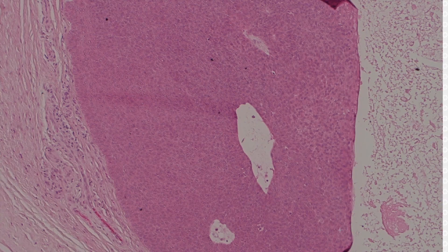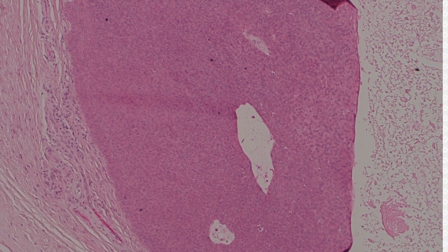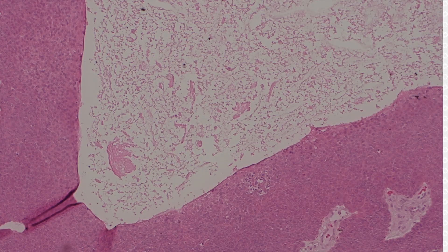Rather than the blue basaloid cells that you'd see in spirodenoma and cylindromas, these are usually pink.